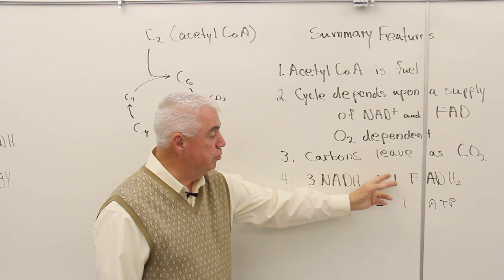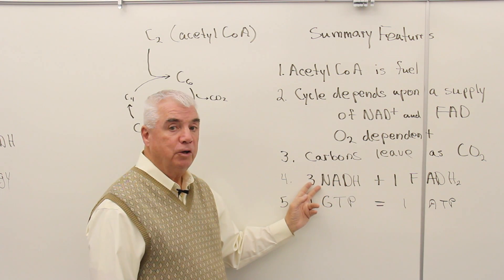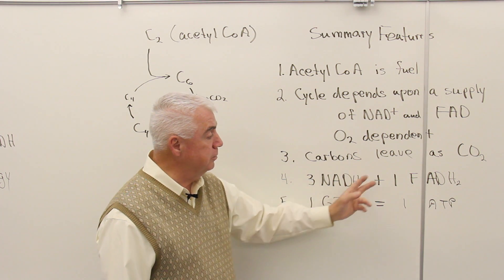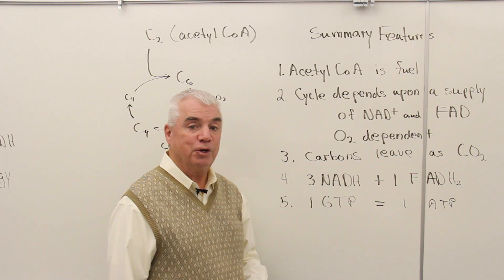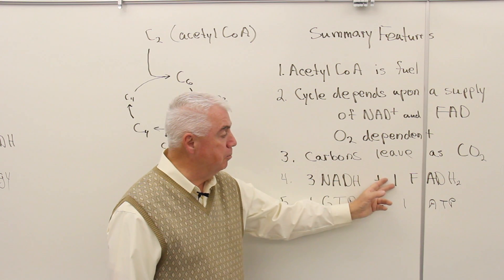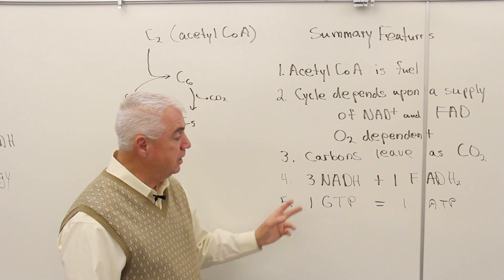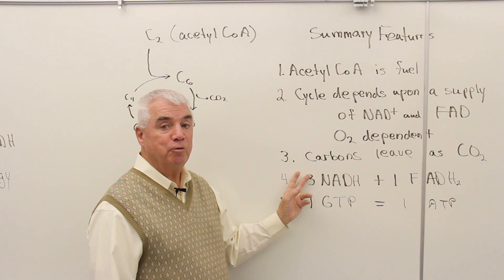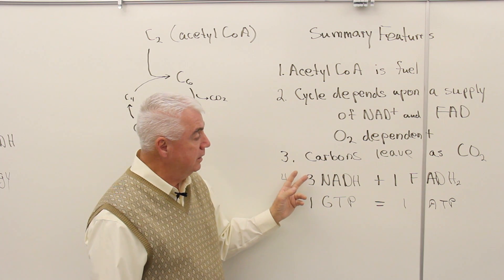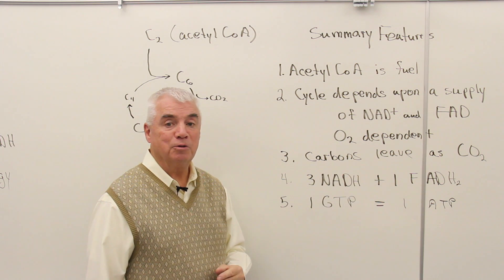The two hydrogen transporters: three molecules of NADH are formed and one FADH2. These numbers are important because in the next step, when we get to the electron transport chain, we'll tabulate how many molecules of ATP are available.